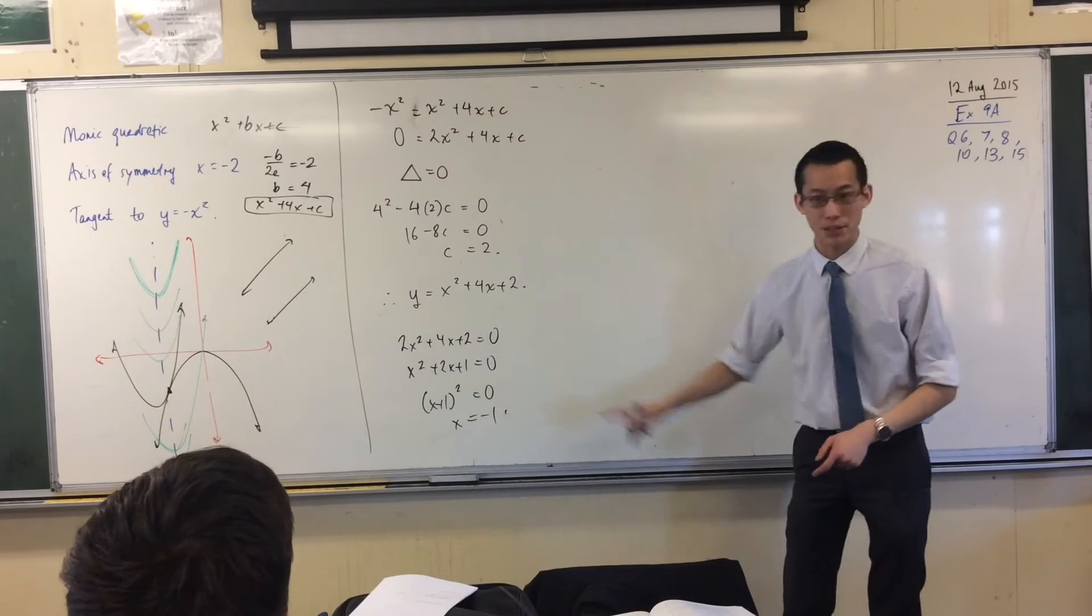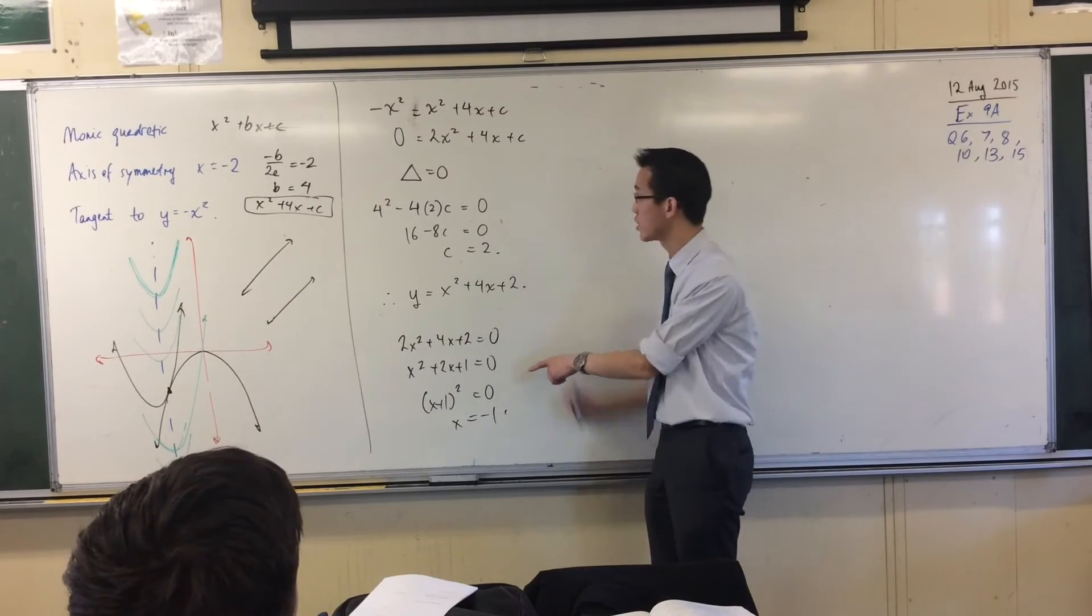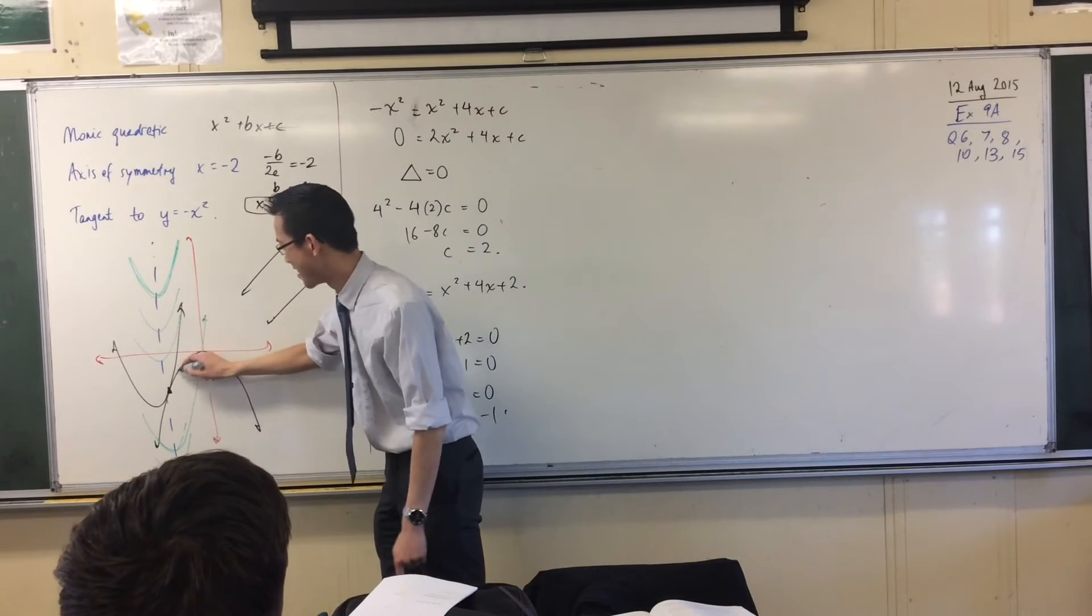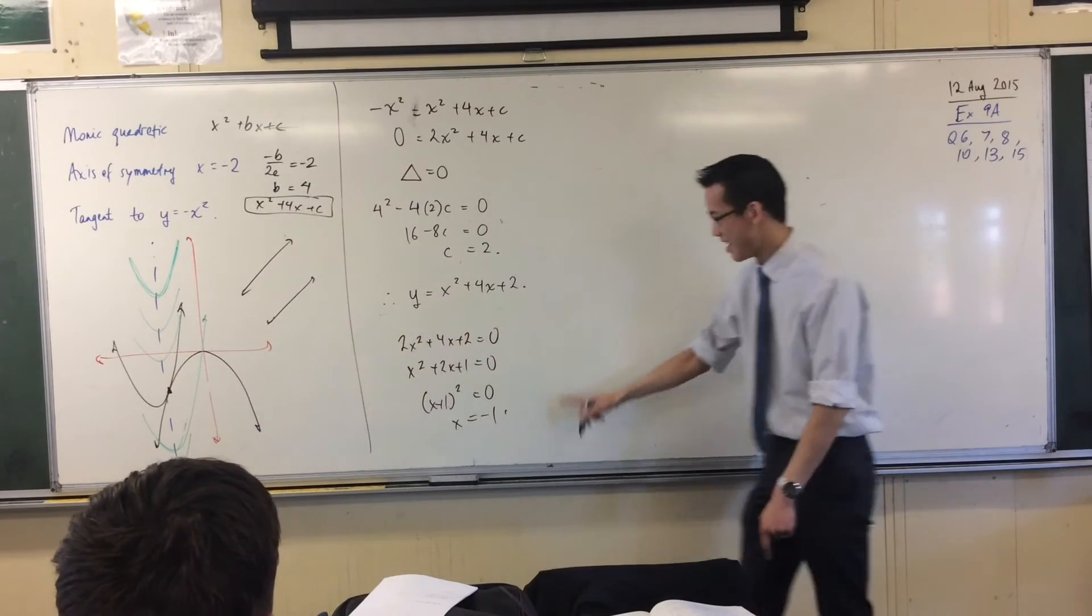And so, firstly, I've established there is only a single point of intersection between these two. And my graph's not the greatest. So it should be at x equals negative 1. That should be where that is.